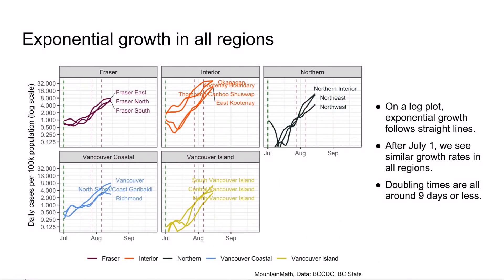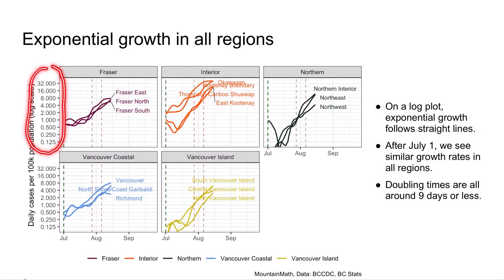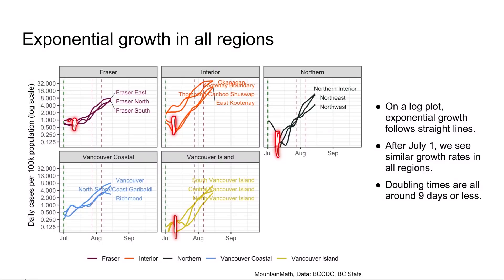The first important point is that we are now seeing exponential growth in all regions of the province. Just last week we had concerns about the Okanagan growing very quickly. We're on a log plot here — each tick mark represents a doubling of the number. On a log plot, an increasing straight line represents exponential growth, and since early July, right across the board, we have seen exponential growth.